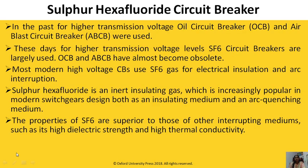In the past, for high voltage applications we were using OCB as well as ABCB. But nowadays for high voltage applications we are using SF6 circuit breakers. OCB and ABCB are almost obsolete. Most modern high voltage circuit breakers use SF6 gas for electrical insulation as well as arc interruption.